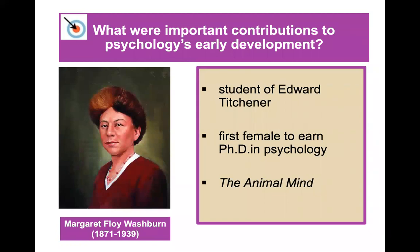Margaret Floy Washburn was actually a student of Edward Titchener and she was the first female to earn a PhD in psychology. She did a lot of studies with animals and wrote a book called The Animal Mind.